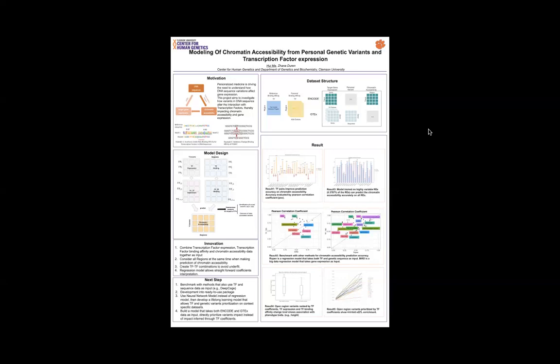Here, you might notice that for some tissues, the accuracy of prediction on all regions are even higher than the highly variable regions. This is because for the highly variable regions, we use the leave one tissue out. But for all regions, the model is trained on all tissues.